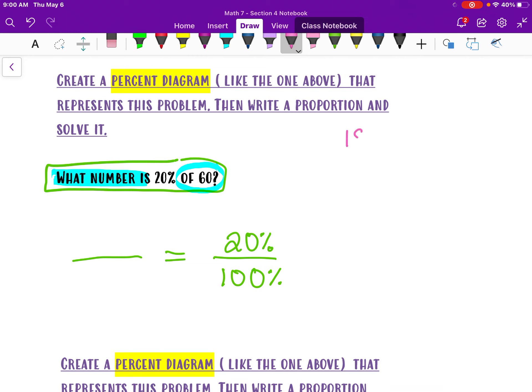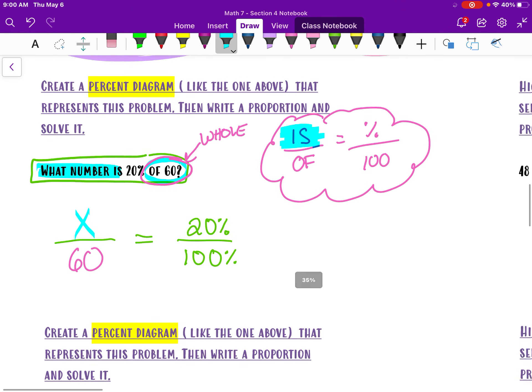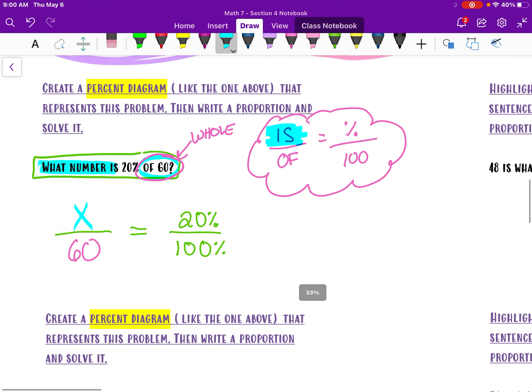So there's my, remember that is over of equals percent over 100, what I showed you in the video, and I think above in the video notes. I see of 60, so that is my whole. So 60's got to go down here. I don't know the is, so I'm going to fill in an X there. So here, that's my proportion setup.